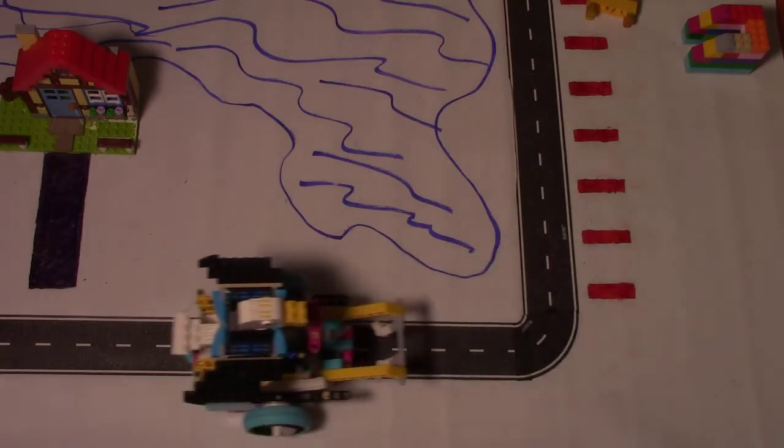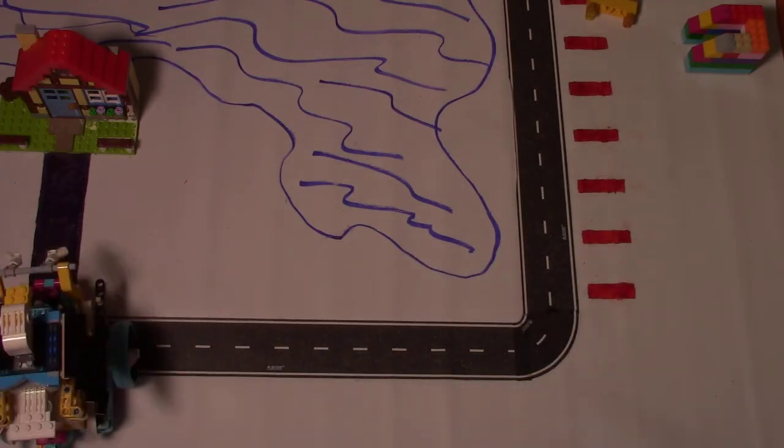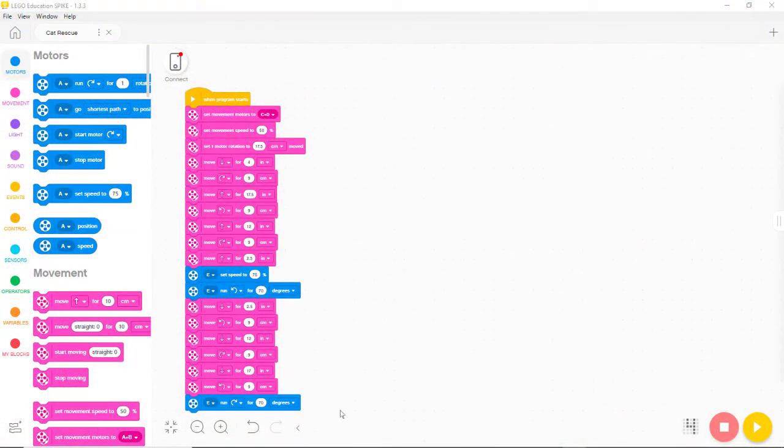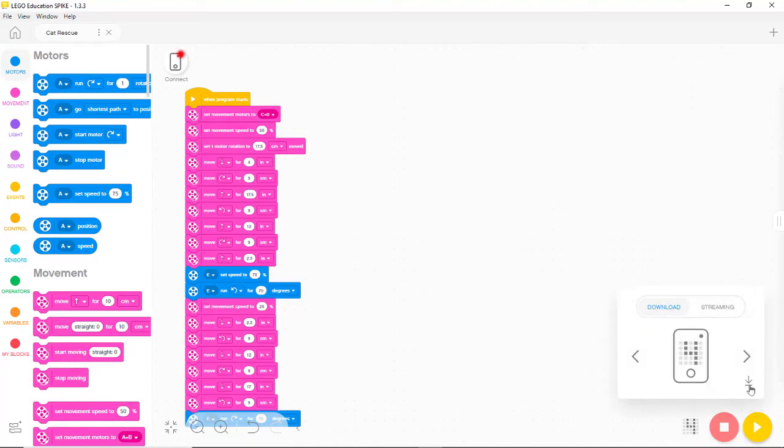So chariot was able to capture Yellow but tried to bring him home too fast. So let's make a change and slow chariot's movements so that moving back to home goes slower than going to find Yellow.